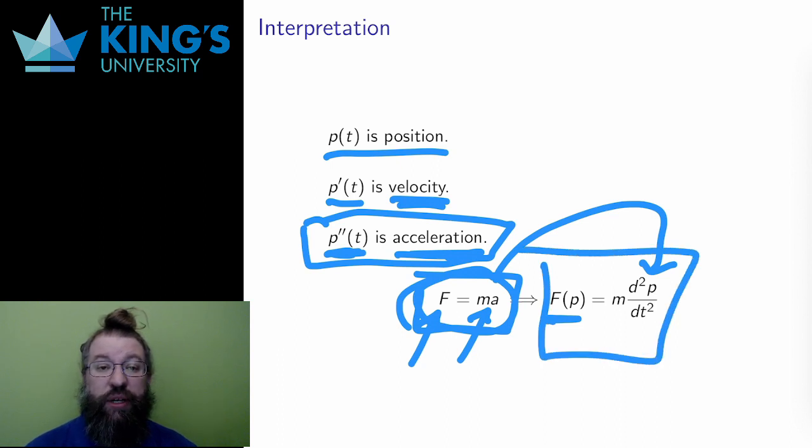If the force is some expression in position, and is equal to mass times the second derivative, then this is the equation. The first and most important equation in Newtonian physics is a differential equation, and determining how an object moves boils down to solving a differential equation.